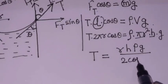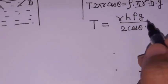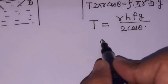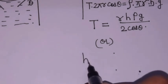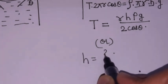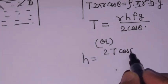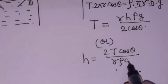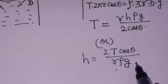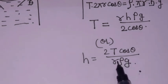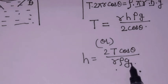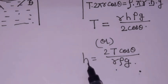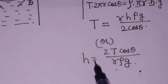Cancelling and simplifying, we get surface tension T = rρgh / 2cosθ, or equivalently the ascent formula: h = 2T cosθ / rρg. This is the final expression for height, valid for both capillary rise and capillary fall.